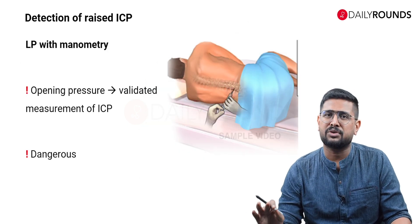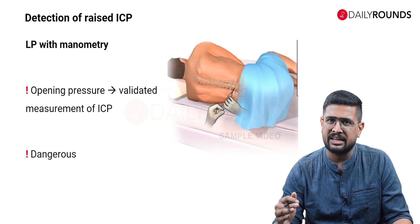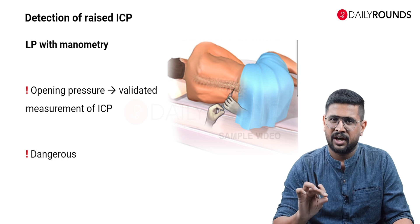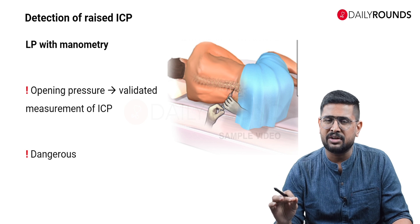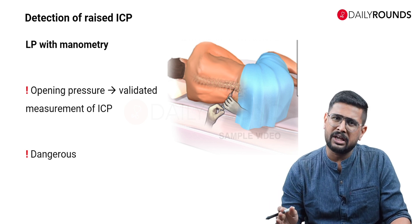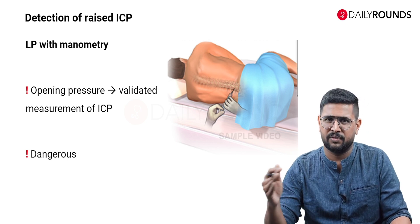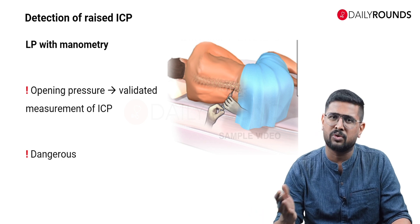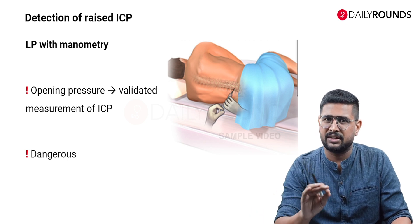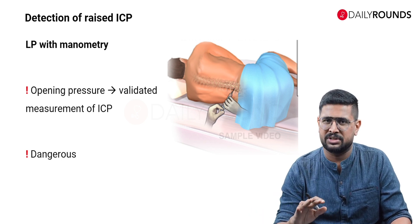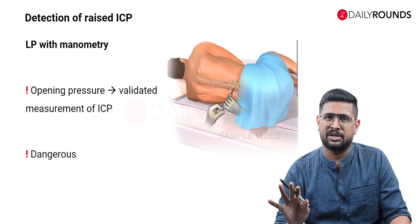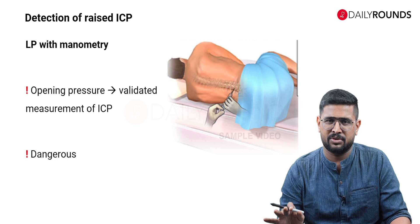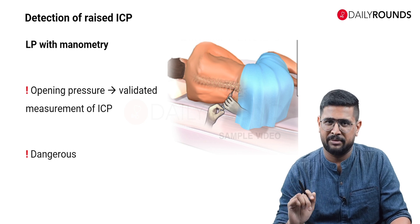Complications like infections and bleeding are part and parcel of this invasive procedure. Another method that could be used is measuring the opening pressure during a lumbar puncture. The opening pressure using a manometer correlates with ICP, so whenever there is a high opening pressure, that correlates with raised ICP. However, this is a dangerous method because the patient can cone at any time.